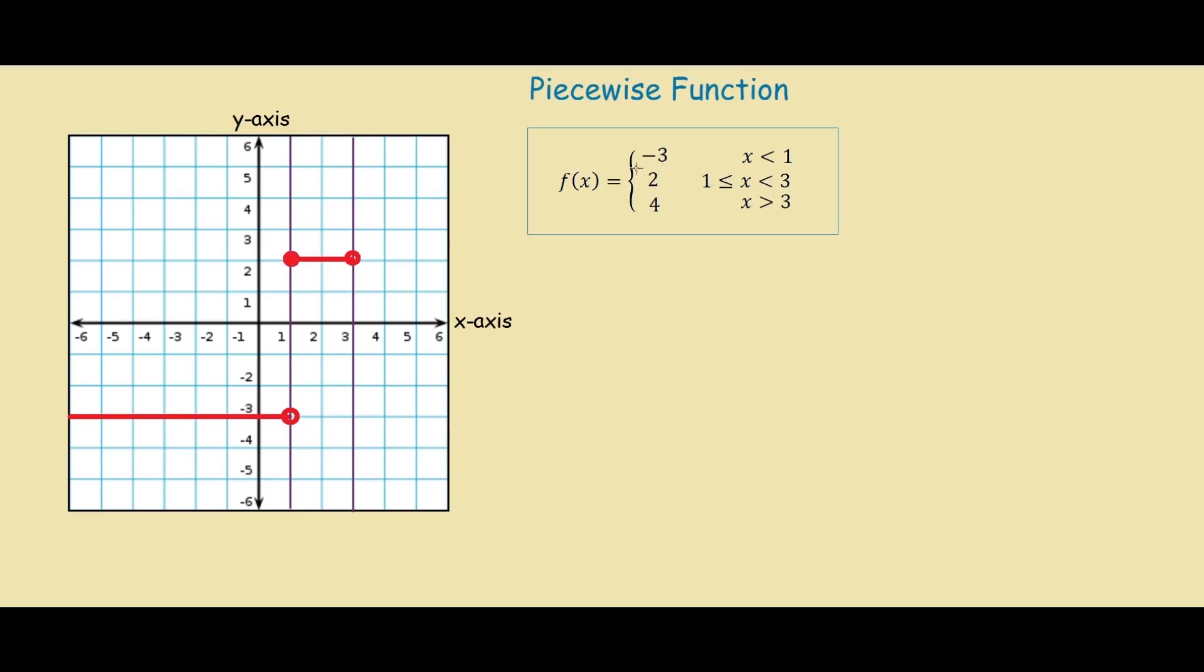The equal sign says that the function 2 is defined on the line x equals 1. So we must include this into our piecewise function when we graph it.